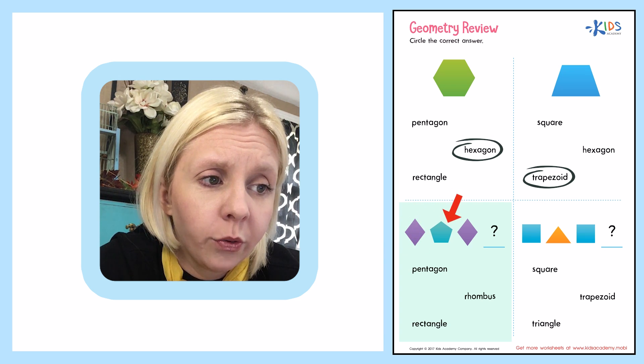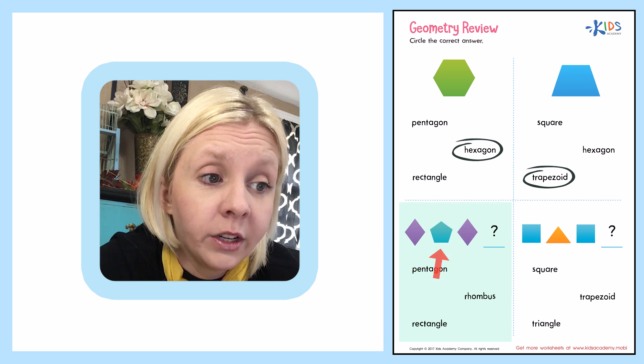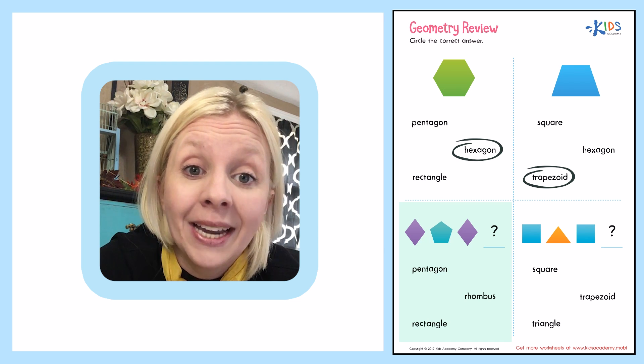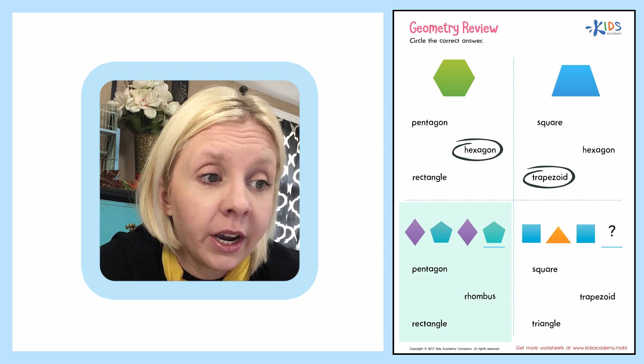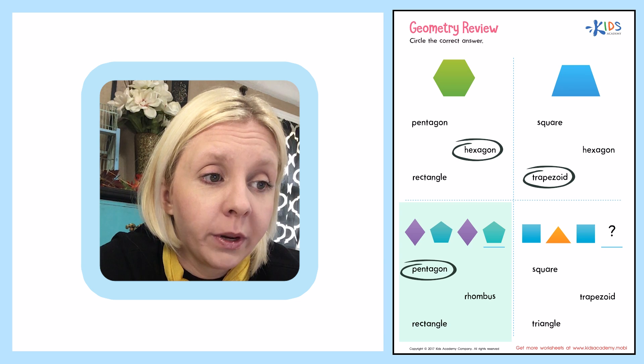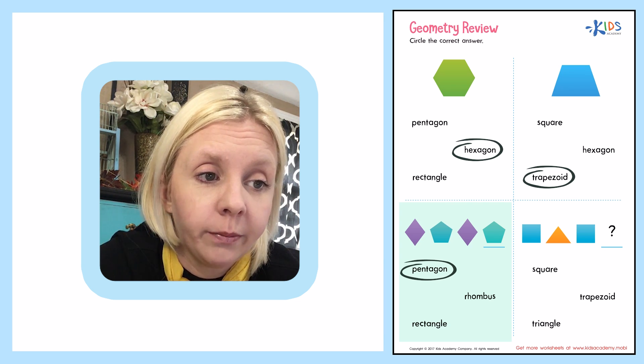Let's count one, two, three, four, five. So that's not a hexagon. That's called a pentagon. A pentagon has five sides. So we're going to circle that one right over here because that would be what would come next. Diamond, pentagon, diamond, pentagon.